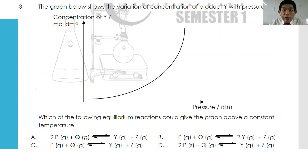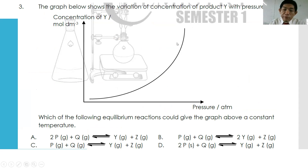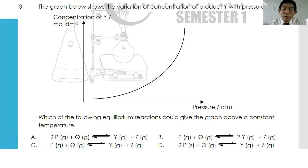Question number three: the graph below shows the variations of concentration of product Y with pressure. You have to focus on Y — all Y values are products. Y increases as pressure increases. When Y increases as pressure increases, equilibrium shifts to the right as pressure increases. Therefore, the right side must have fewer total moles of gas.